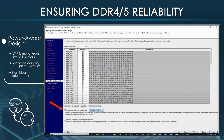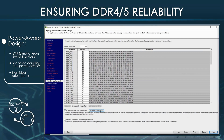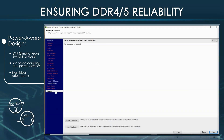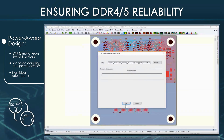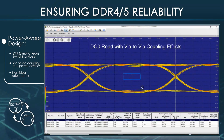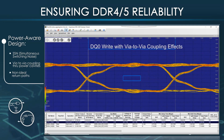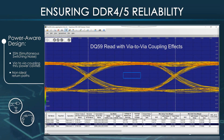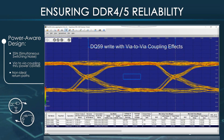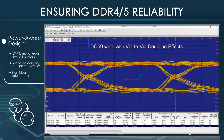Now let's include coupling from both nearby vias and the package, but exclude trace-to-trace coupling, and rerun the simulations. With via-to-via coupling enabled, the eye for DQ0 read, DQ0 write, DQ59 read, and DQ59 write are observed. The via-to-via coupling did not affect the eye for DQ0, but it did adversely affect DQ59's eye, as we already saw earlier.